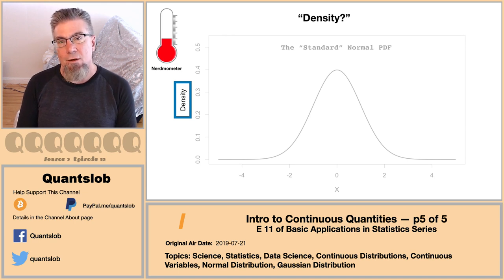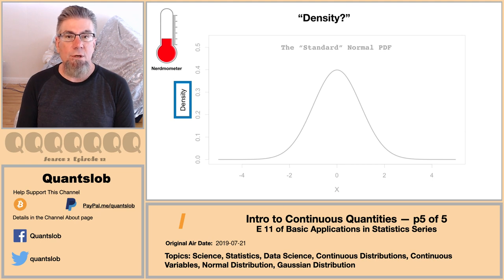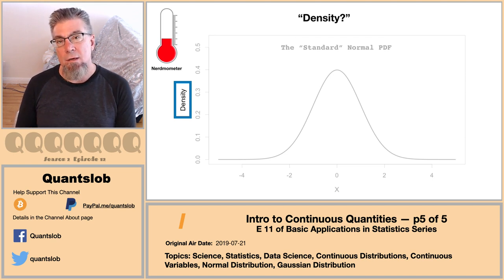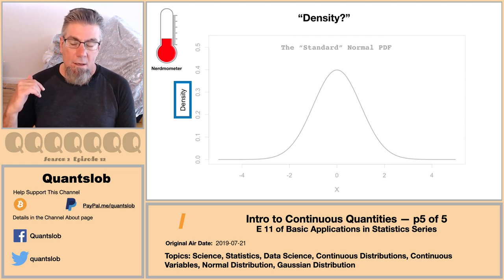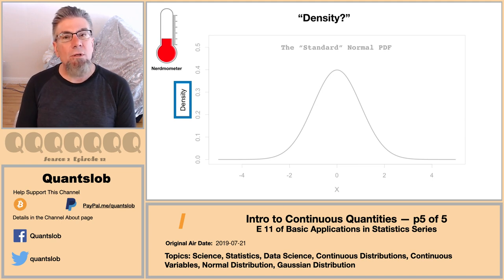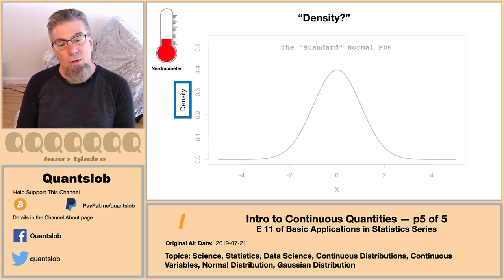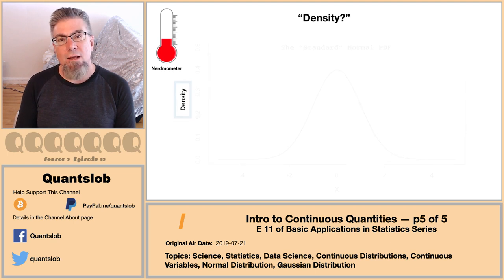In the previous edition, we looked at a couple continuous distributions including a normal or Gaussian distribution. In both, the y-axis is labeled with a dimension called density. So what's density? If you've ever taken a physics class, you know physicists are absolutely passionate about units — and rightly so, units are absolutely key. In stats, not so much, which is somewhat unfortunate. But if we're comfortable with units, then this so-called density dimension is easy to deal with.